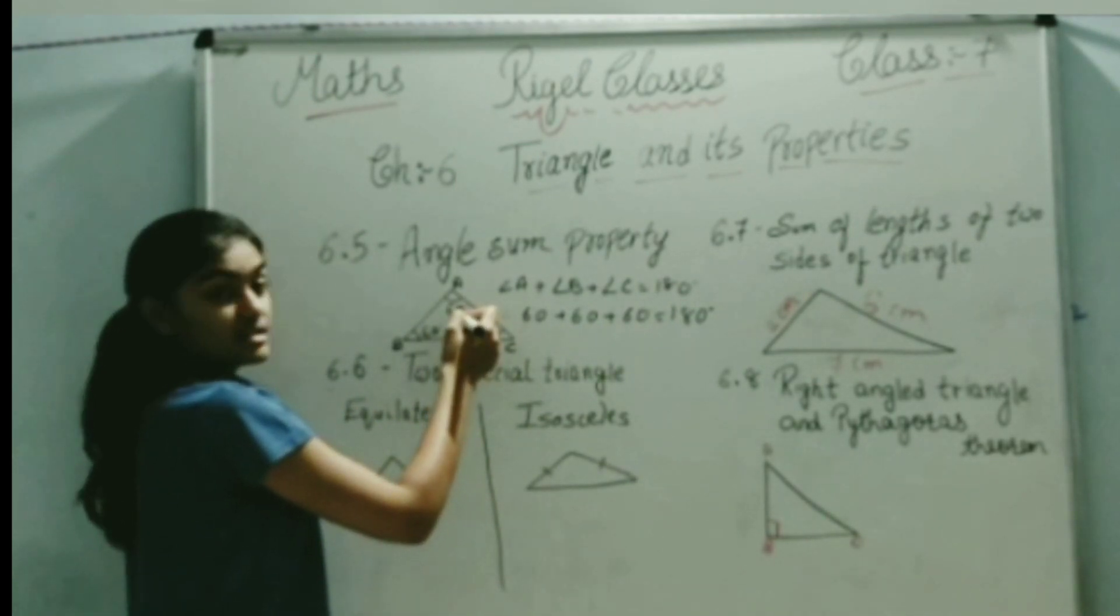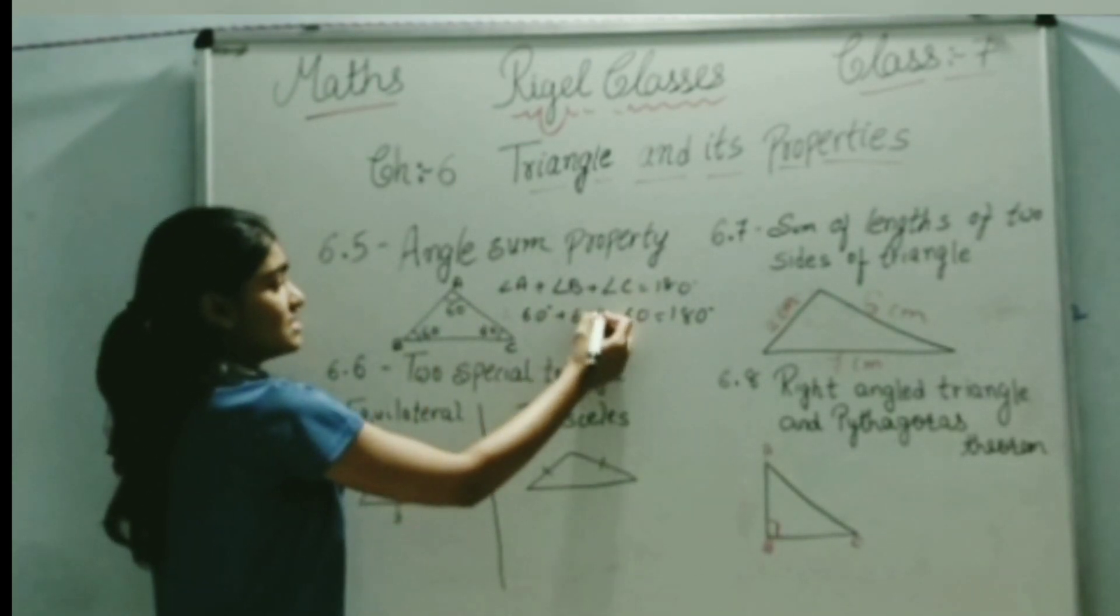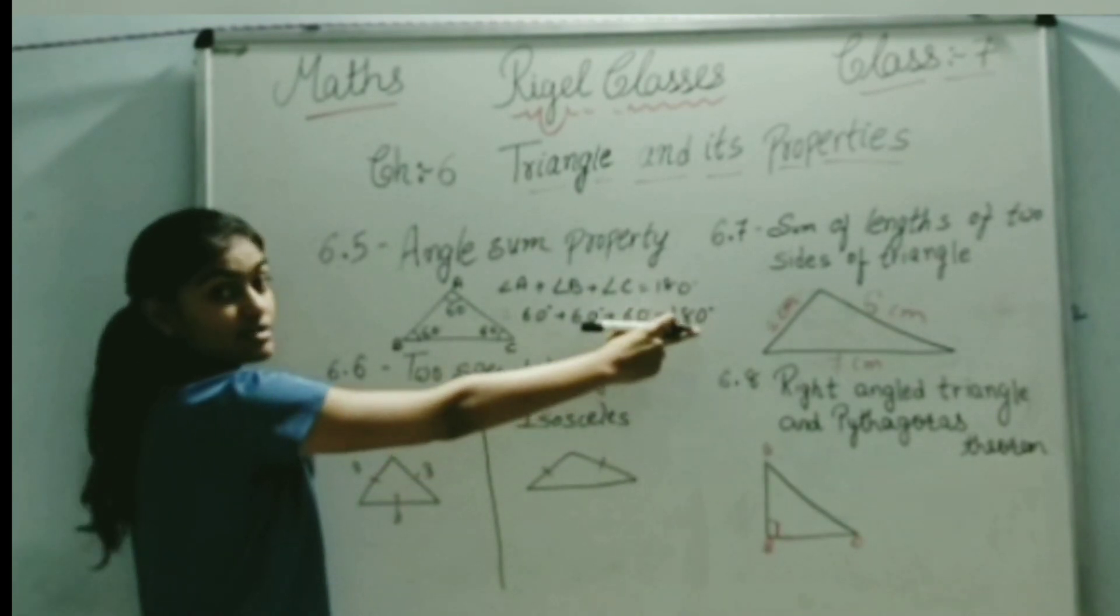Here we have taken 60 degrees. So 60 degrees plus 60 degrees plus 60 degrees equals 180 degrees.